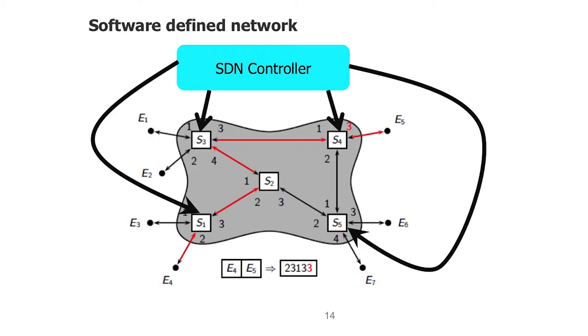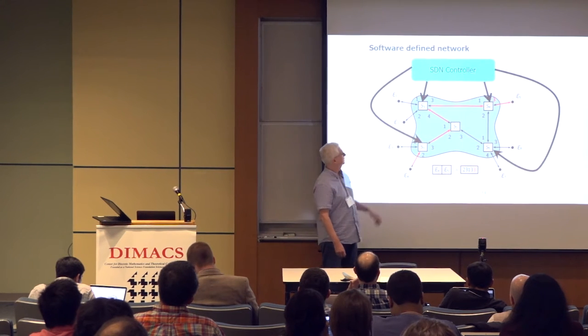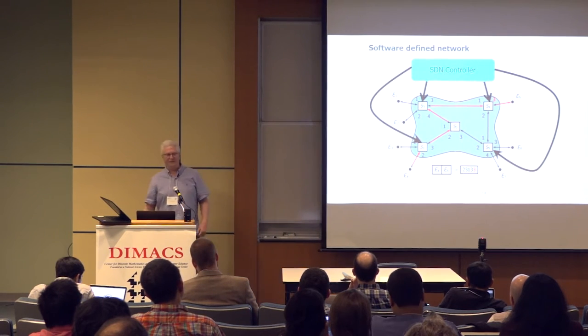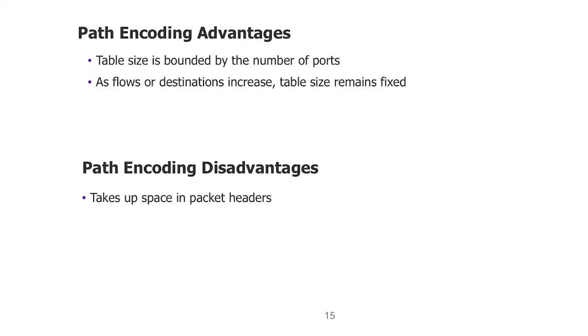Because it's SDN, the controller tells routers on the edge of the network what path encoding to put in a packet coming from outside that wants to get to a given endpoint. The SDN controller also figures out what labels routers should put on their ports and tells them, which is how they fill their forwarding tables. The advantage: table size is bounded by the number of ports. Flows or destinations increase, but table size remains the same.